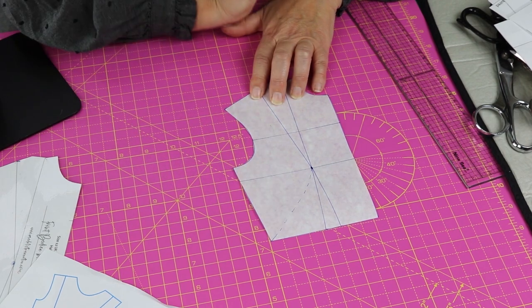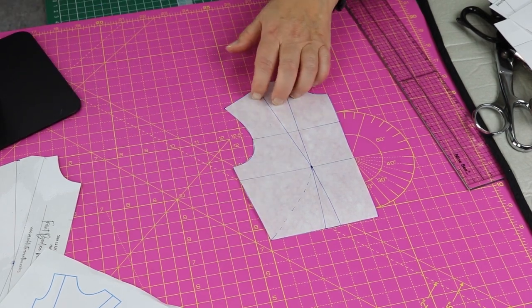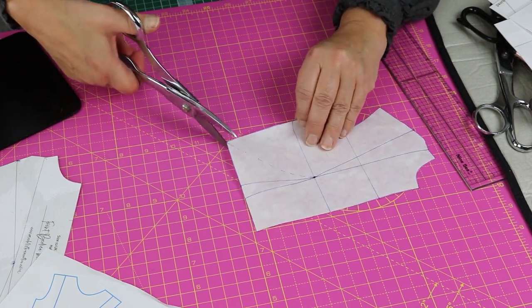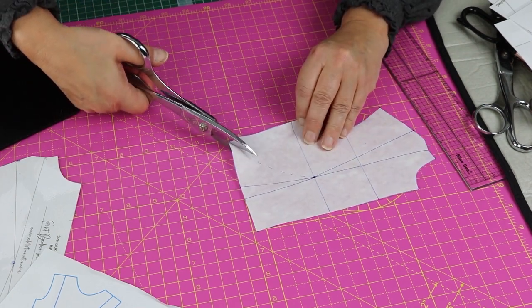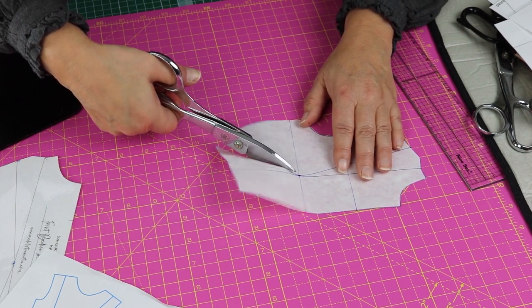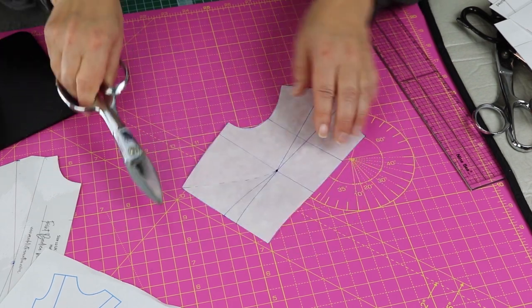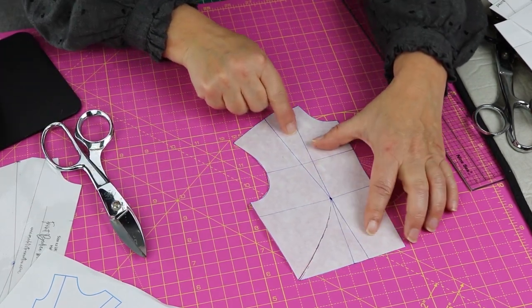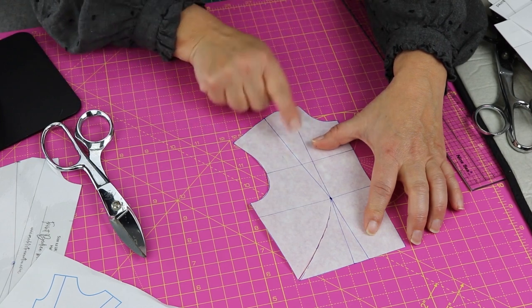All I have to do is slash along the line I've planned. And then if I'm putting both of these darts in, I need to fold them both in. If I only want one to go in, I would only fold one in.